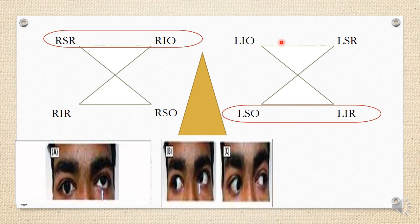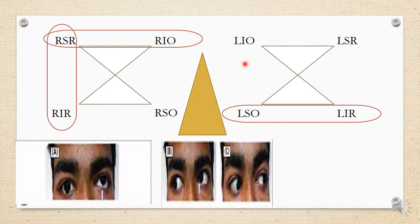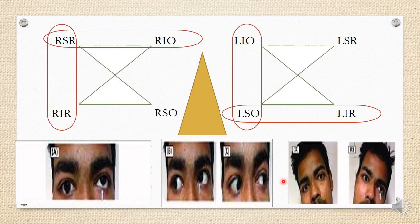Step two of the second example: the patient looks right and left. Hypertropia increases on right gaze and is absent on left gaze. On right gaze, the implicated muscles are right superior rectus, right inferior rectus, left inferior oblique, or left superior oblique. Circle the right-sided muscles.